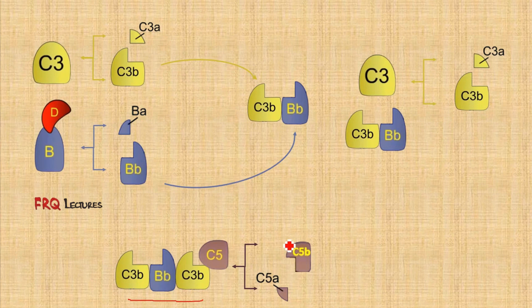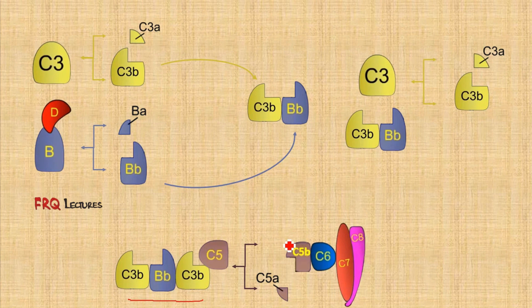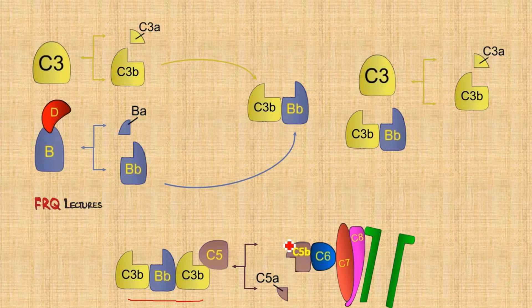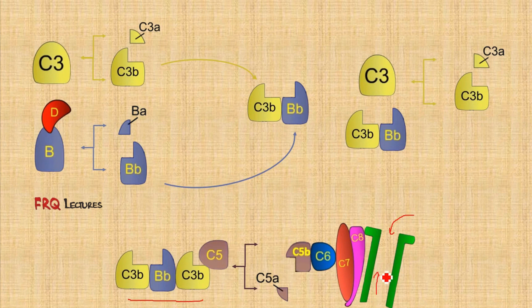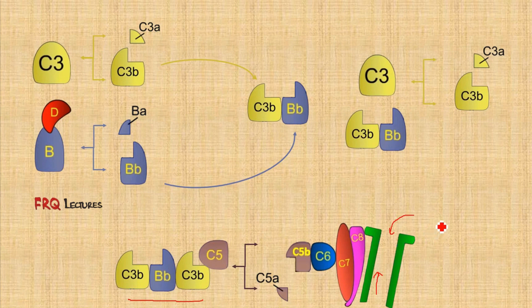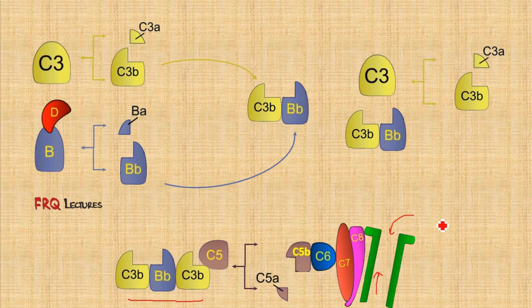From C5b onwards, the pathway recruits C6, C7, C8, and finally many C9 molecules to form a polymeric channel — the MAC. This causes movement of water and ions, creating osmotic imbalance that the bacterium cannot tolerate. Water accumulates, pressure builds, and the bacterium undergoes lysis and is eliminated. That is the complete concept of the alternative complement pathway.